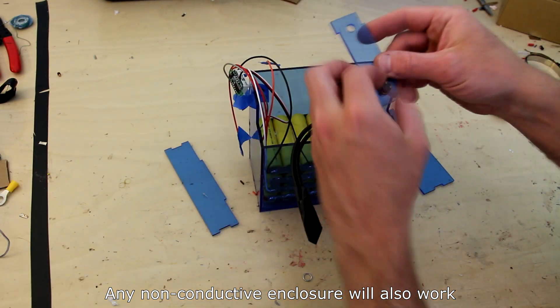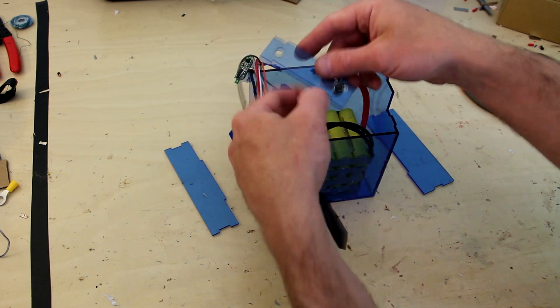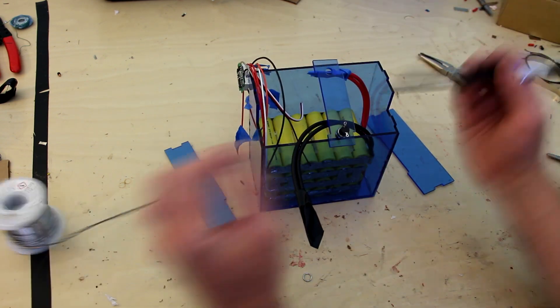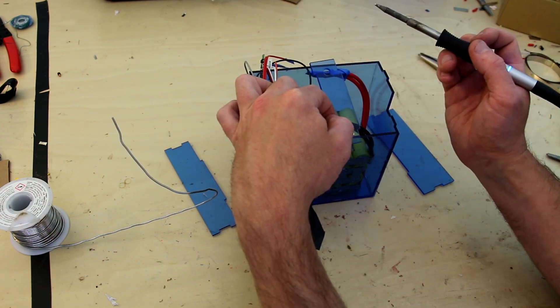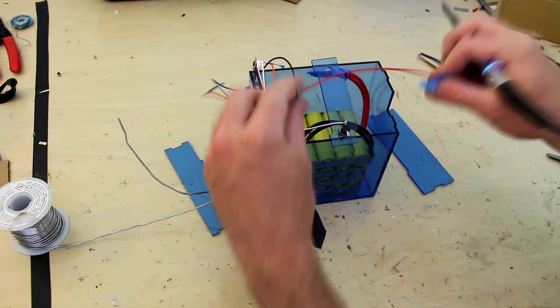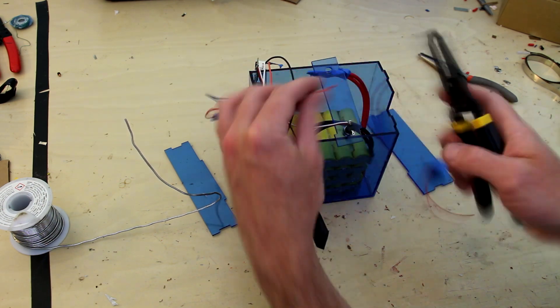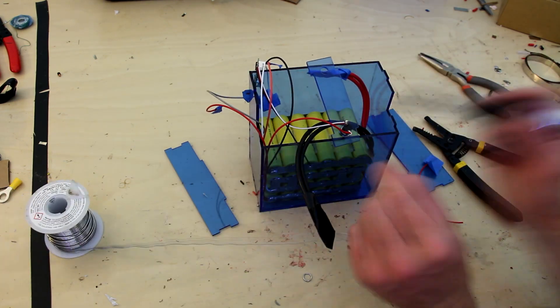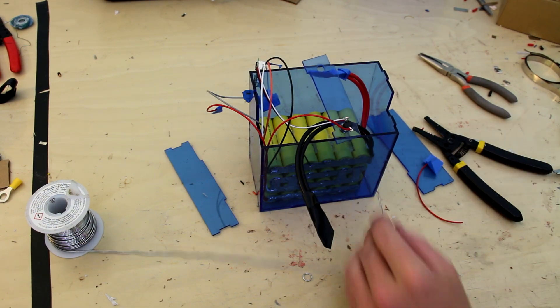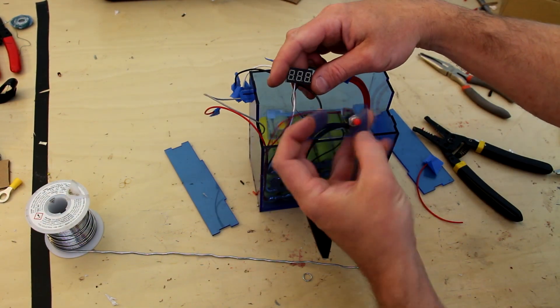The enclosure I designed has a cutout for a button, and this is to activate the voltmeter that I talked about earlier. The positive lead from the battery goes to one end of the button, and then the positive lead of the voltmeter goes to the other lead of the button, so that when the button is pressed power is transferred from the positive lead into the voltmeter, thus displaying the battery's voltage. I found this voltmeter on eBay for $3.